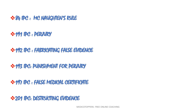Next comes 191, 192, and 193 — these three are interrelated. IPC 191 is perjury, meaning willful making of false evidence. IPC 192 talks about fabricating false evidence, and 193 talks about punishment for perjury.